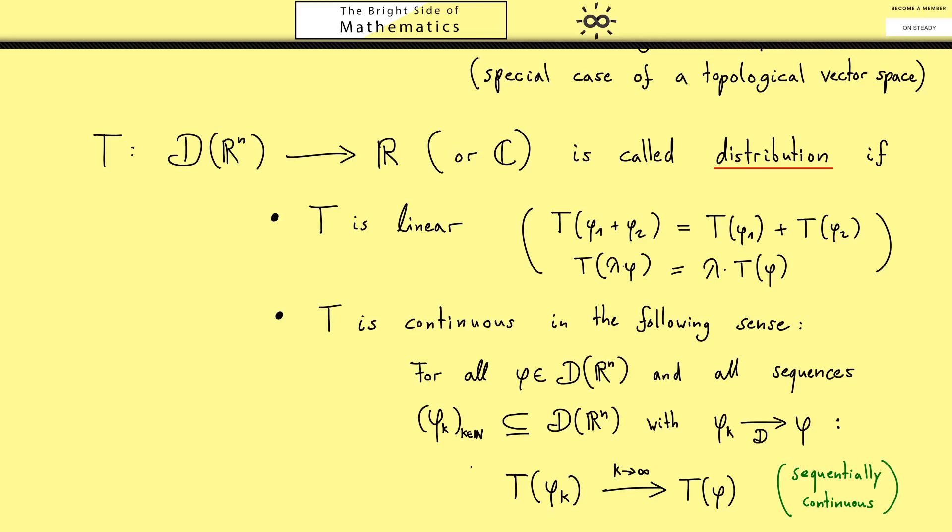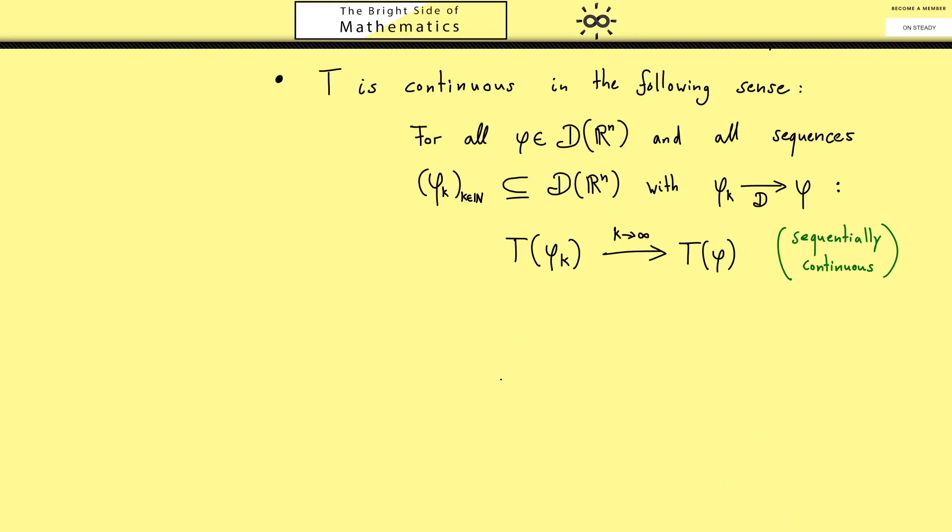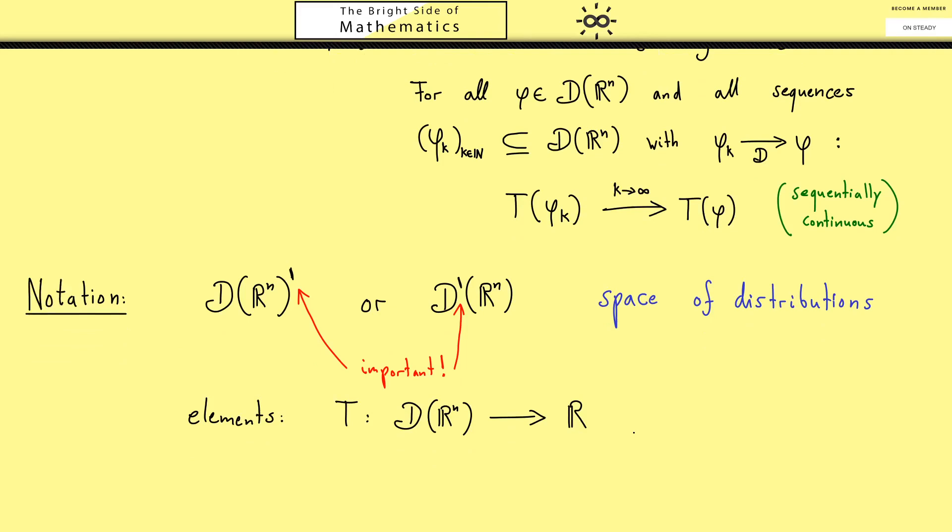Now you know what a distribution is. And of course, for them we have a nice notation. One uses again the curve D and also writes down the domain of definition if important. But then as an upper index one uses this little line here, we usually just call it prime. And because one could easily overlook this, one usually puts that to the D. Hence you can see this little prime is the important detail one shouldn't miss. Please keep in mind this doesn't have anything to do with derivatives at all. It's a usual notation when one looks at a vector space like this one and wants to describe all the continuous linear maps.